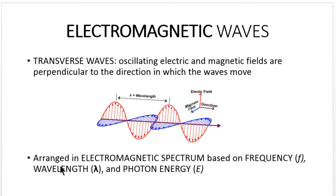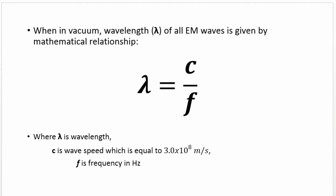Another definition is that electromagnetic waves are arranged in the electromagnetic spectrum based on frequency, which we consider as the variable f, wavelength which is called lambda, and photon energy denoted by capital E. In vacuum, the wavelength of all EM waves is given by the relationship: lambda equals c over f, where c is the wave speed, a constant of 3 times 10 to the 8th meters per second, and f is the frequency in Hertz.